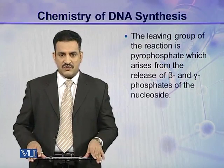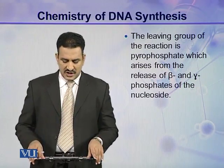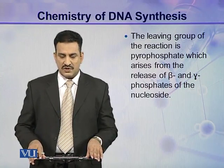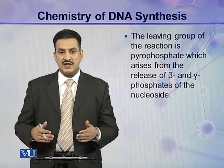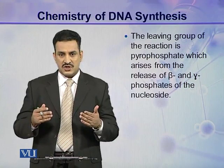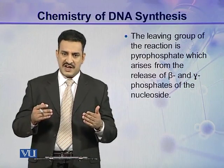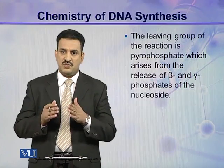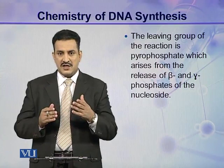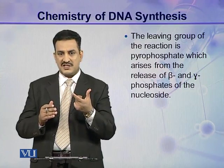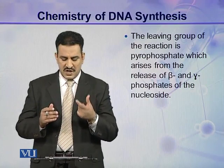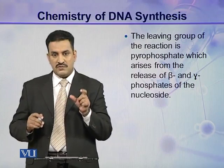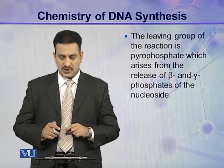Pyrophosphate arises from the release of the beta and gamma phosphates of the nucleoside triphosphate. The 3' OH attacks the alpha phosphoryl bond, that bond is broken, and the two phosphate groups — the beta and gamma phosphate groups — are released as a result of this reaction. These two phosphates are called pyrophosphate.